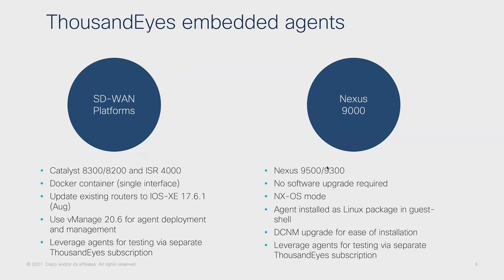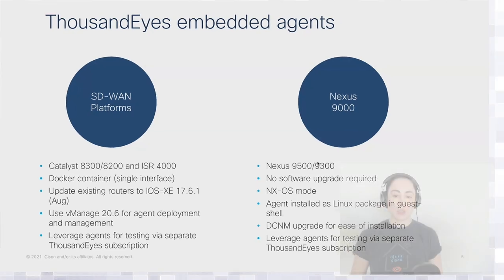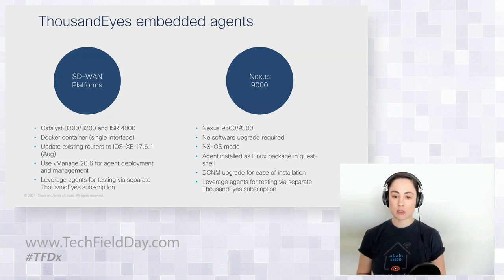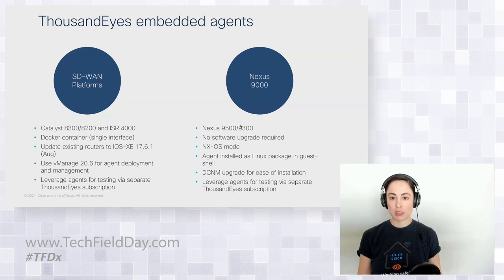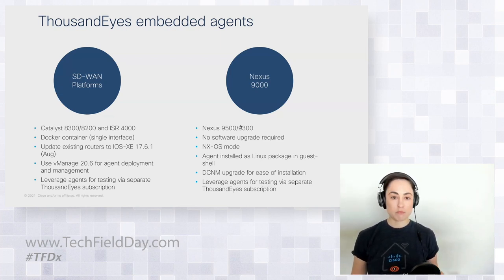The Catalyst 8300, 8200, and ISR 4K are covered for the SD-WAN platforms, deploying as a Docker container. In the initial implementation it has a single interface, with plans to add additional interfaces to support more complex testing like full-mesh testing between SD-WAN sites. This will be available in August with IOS XE 17.6 and vManage 20.6, with a feature template that makes deployment easy across selected devices. A ThousandEyes subscription is required, and agents are bound to your account to run active tests.